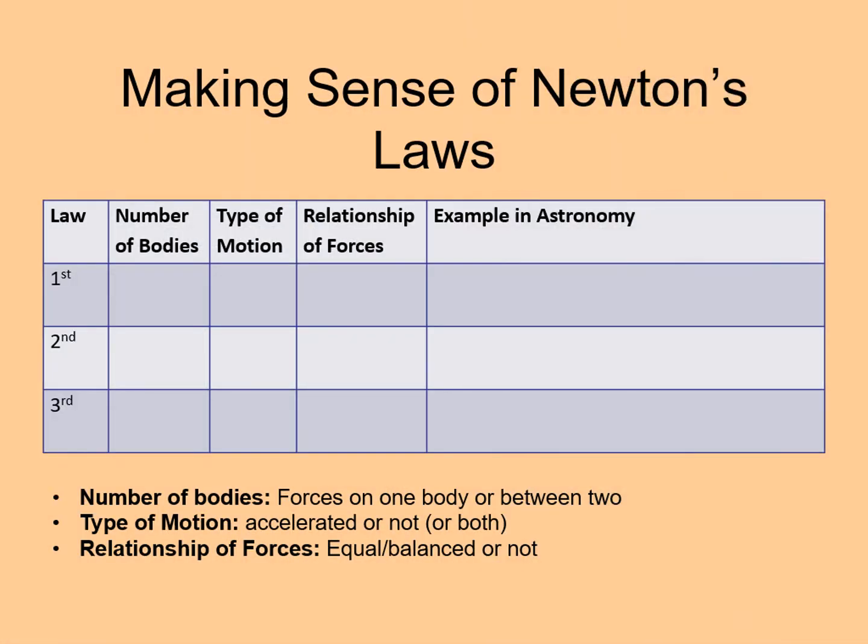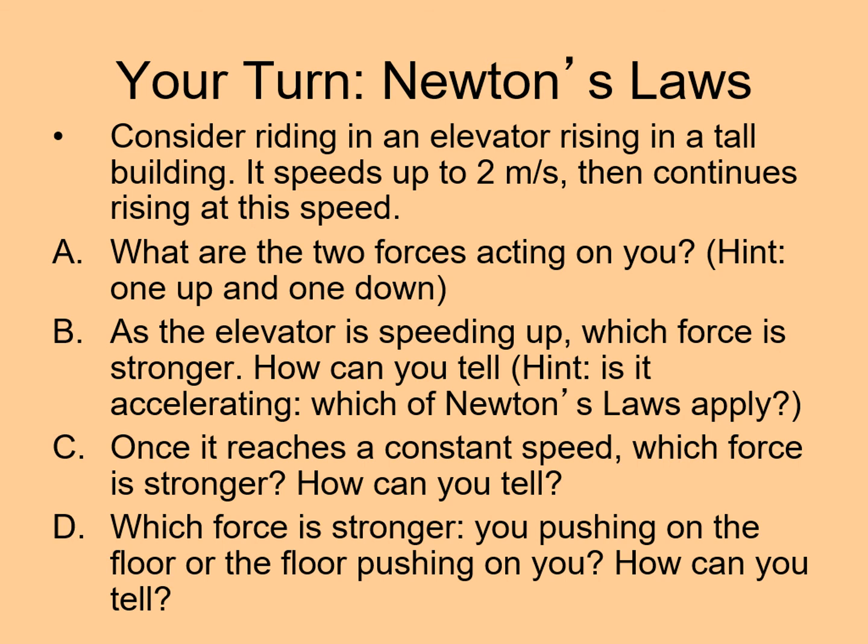Now that we've gone through Newton's laws of motion, you should be able to fill in a summary table — this will help you know which laws apply to which situations. Try filling it in before doing the next exercise, and leave room in the last column to add more astronomy examples as we learn about them later in the course. Now it's time to apply Newton's laws to the case of riding an elevator: it starts out speeding up to 2 meters per second, then goes at a constant speed. Notice that one part deals with the time when it is speeding up, while another deals with when it's going at a constant speed. Try looking at things around you and figuring out what forces are acting on them — do those forces balance out, or do they cause accelerations?